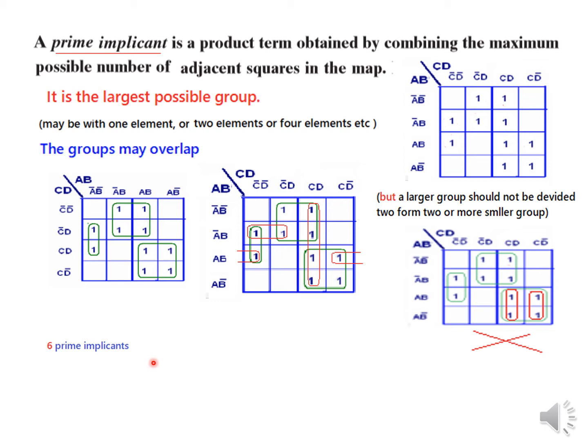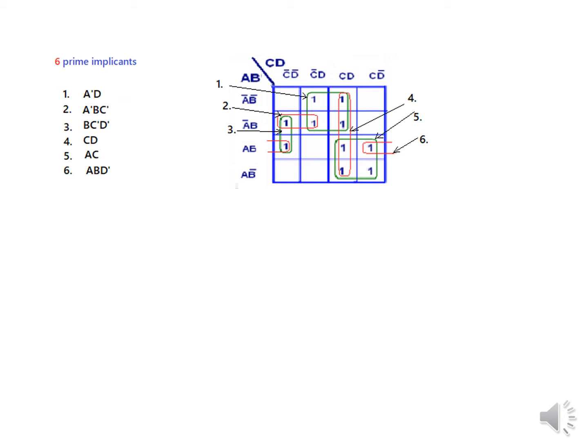So six prime implicants. Now how to proceed? First, it is better that we number all of them: one, two, three, four, five, and six. Then we write the values. The first value — a is common giving a-dash, and d is common giving d, so the first value is a-dash d. Similarly you can write all the values.